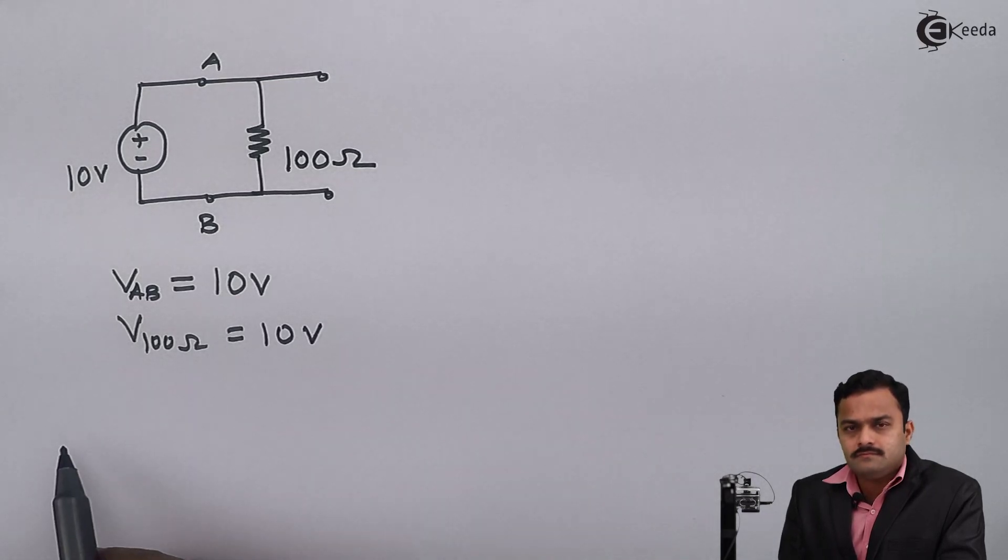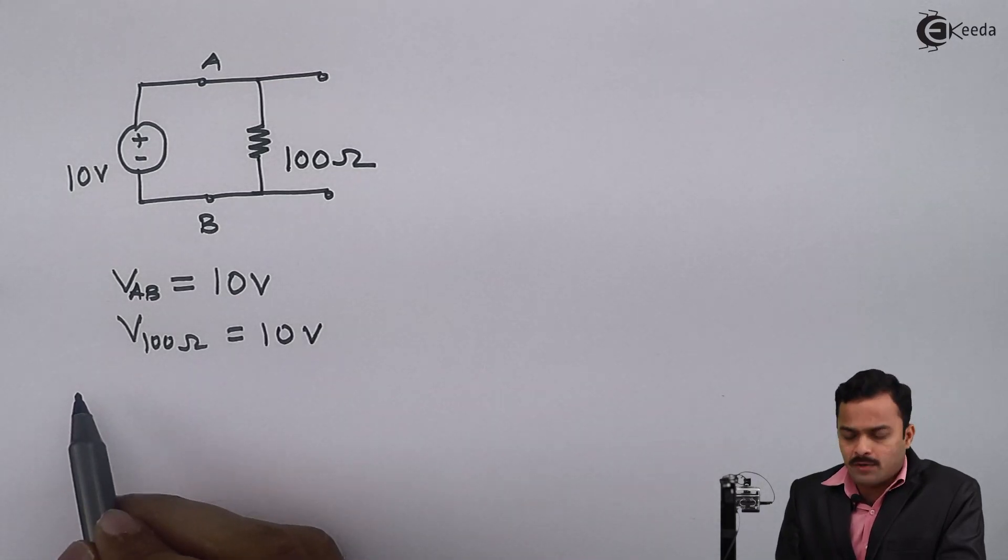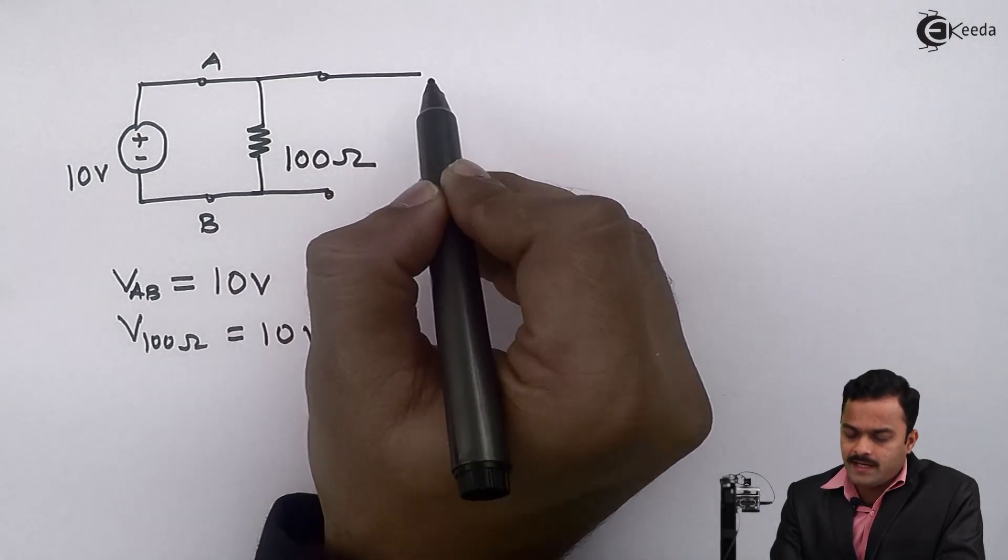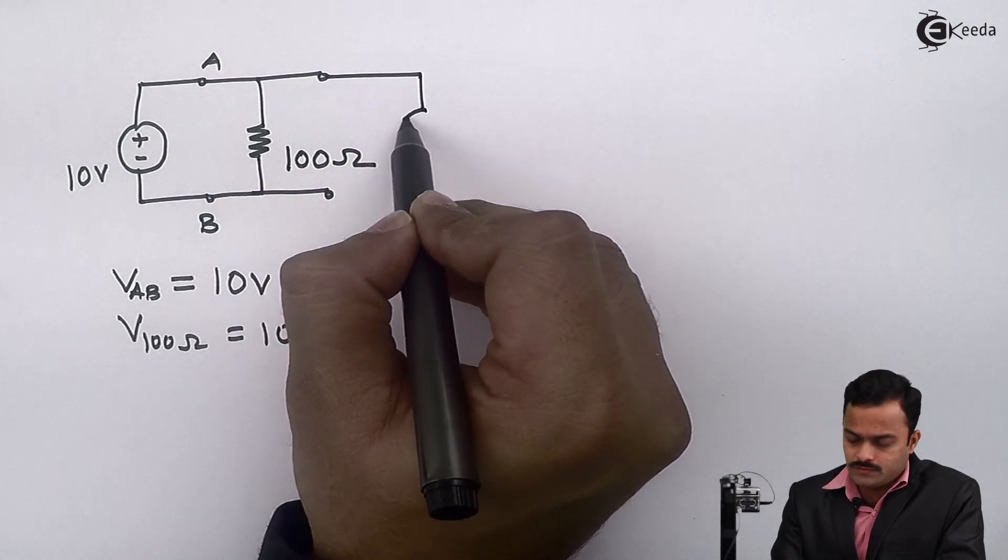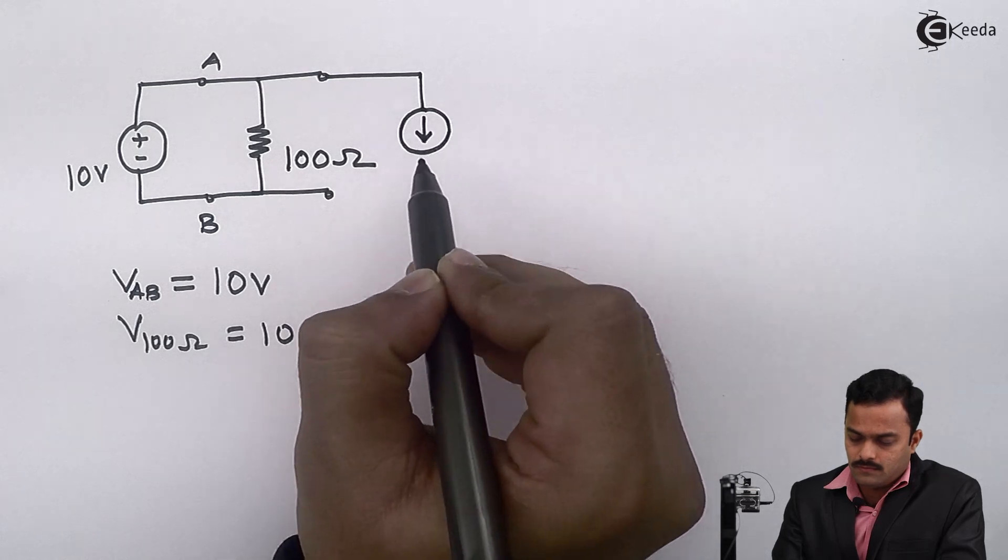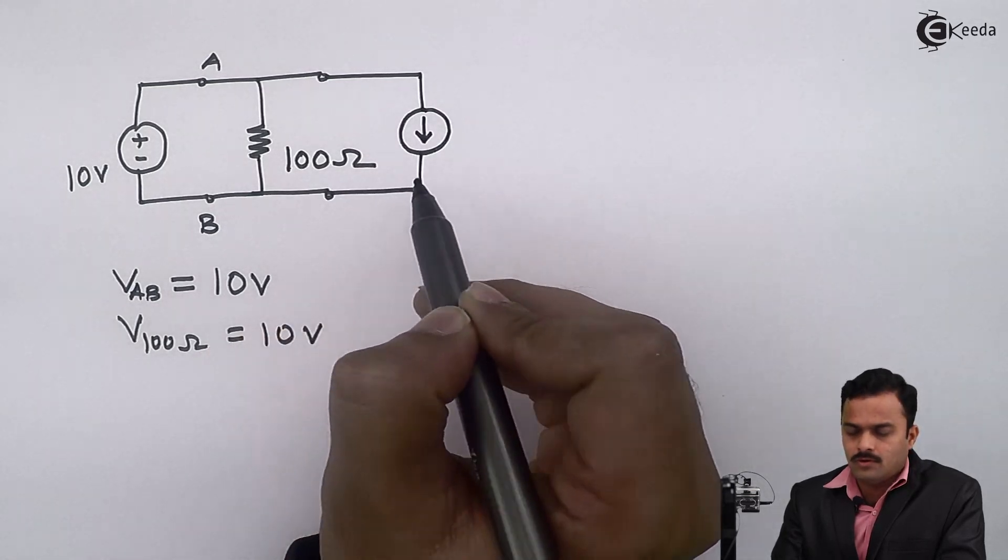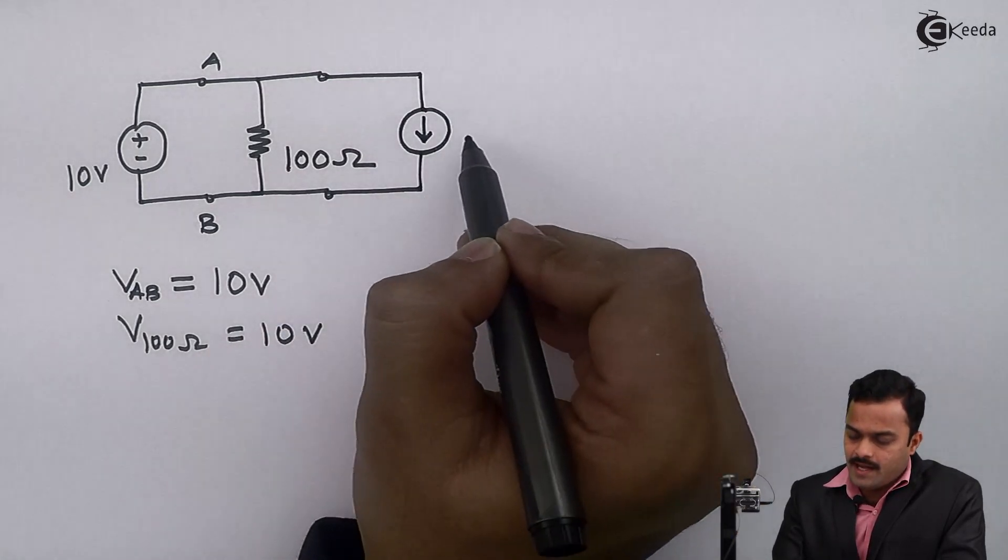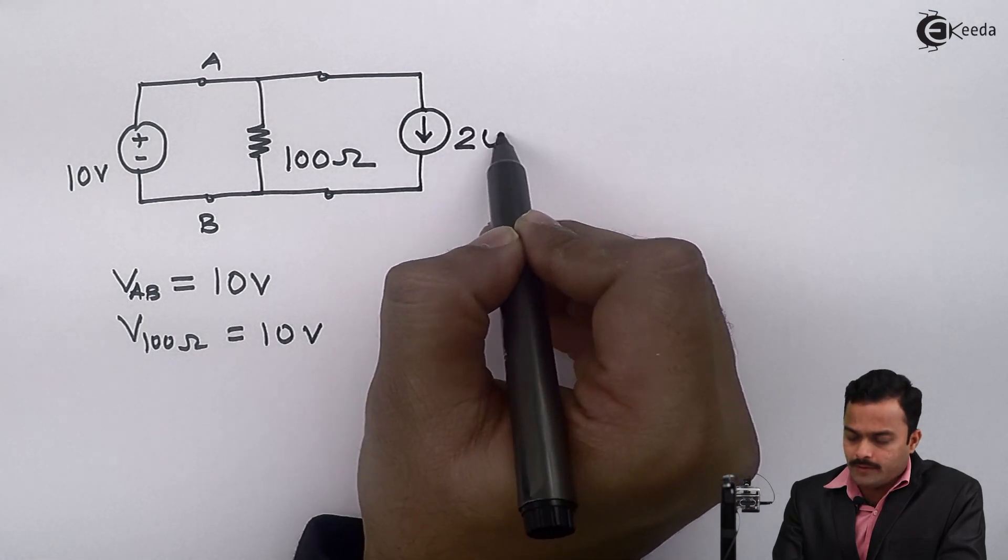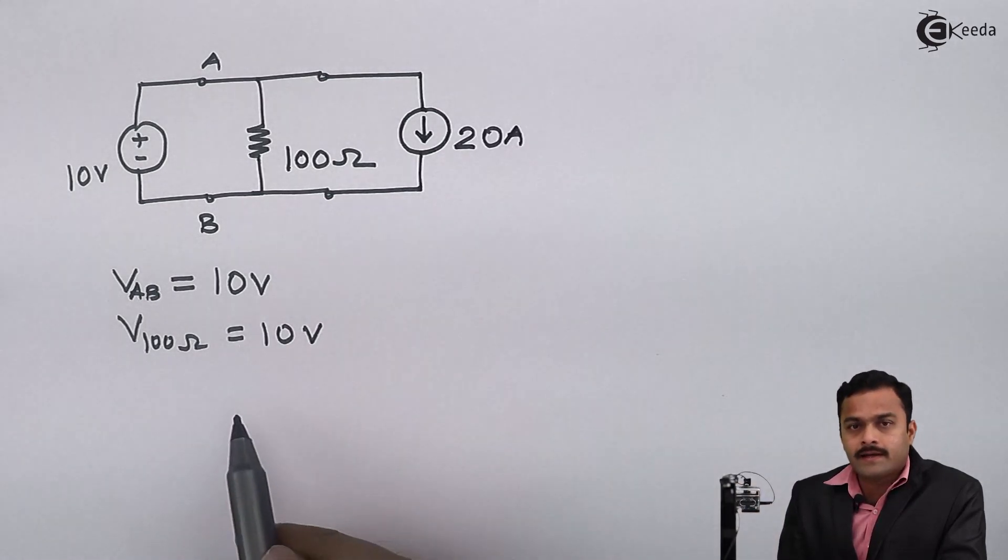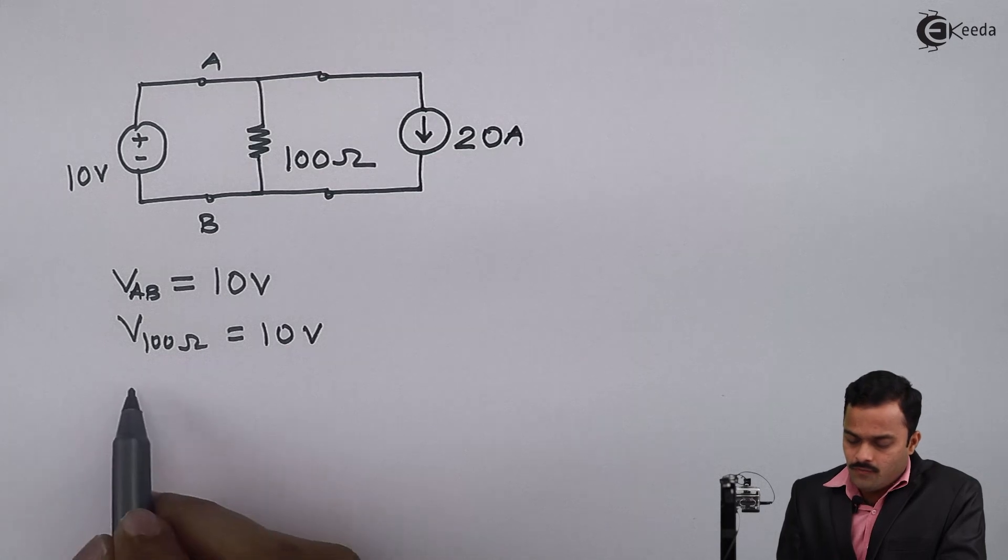I further extend this problem and I will connect one current source of downward direction with a value of say 20 amperes. Again the question is the same: what is the voltage across 20 amperes?